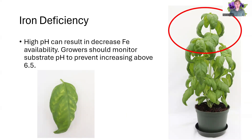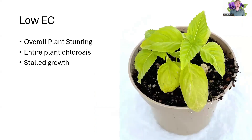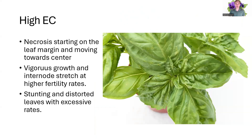Iron deficiency — high pH reduces your iron availability. It's going to occur in the top one-third of the plant where new growth is occurring, shown in red. It will be interveinal chlorosis shown in the close-up shot. Low EC causes overall plant stunting, entire plant chlorosis, and stalled growth. In high EC, you see necrosis starting on the leaf margin, spreading inward to the center of the plant. You'll also see vigorous growth and large internode stretch at higher fertility rates, lack of flavor profiles, and stunting in distorted leaves with excessive rates.